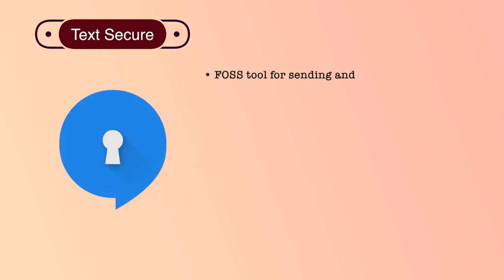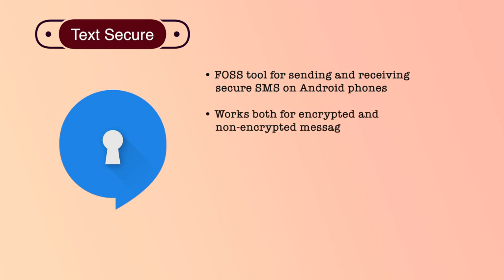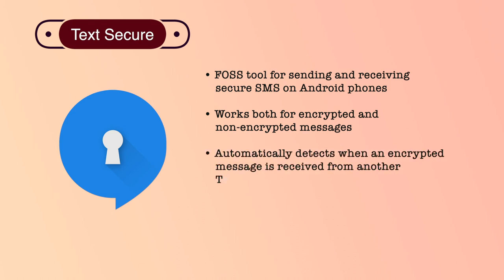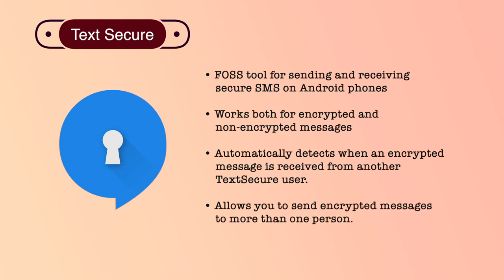TextSecure is a FOSS tool for sending and receiving secure SMS on Android phones. It works both for encrypted and non-encrypted messages, so you can use it as a default SMS application. To exchange encrypted messages, this tool has to be installed by both the sender and the recipient of the message, so you will need to get people you communicate with regularly to use it as well. TextSecure automatically detects when an encrypted message is received from another TextSecure user. It also allows you to send encrypted messages to more than one person. Messages are automatically signed, making it nearly impossible to tamper with the content of the message.